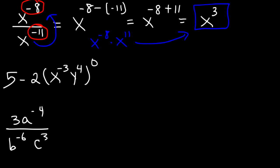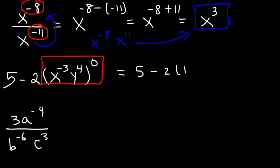Now for the next example, anything raised to the 0 power is 1. So only that portion becomes a 1. This is 5 minus 2 times 1, which is 5 minus 2, and that whole thing is equal to 3.